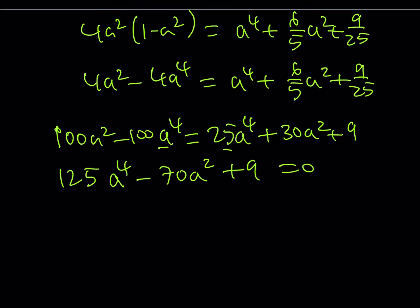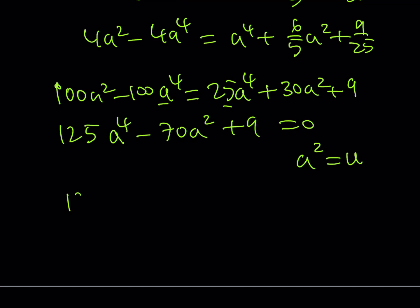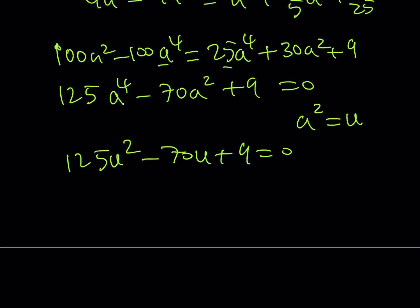Now if you do a little substitution here, call a² = u, you should be getting 125u² - 70u + 9 = 0. And if you go ahead and use the quadratic formula for this one you could probably factor it too but I'm just going to use the quadratic.